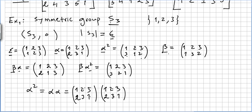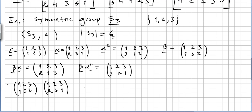Beta keeps 1 fixed and swaps 2 and 3, so 2 goes to 3 and 3 goes to 2. For beta·alpha, we apply alpha first then beta. One goes to 2 under alpha and 2 goes to 3 under beta, so 1 goes to 3 in beta·alpha. Two goes to 3 under alpha and 3 goes to 2 under beta, so 2 goes to 1 in beta·alpha. Three goes to 1 under alpha and 1 stays 1 under beta, so 3 goes to 3 in beta·alpha.